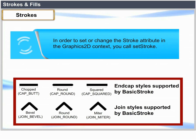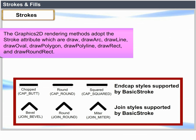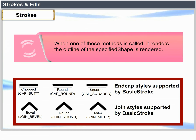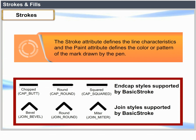The Graphics2D rendering methods that use the stroke attribute are draw, drawArc, drawLine, drawOval, drawPolygon, drawPolyline, drawRect and drawRoundRect. When one of these methods is called, it renders an outline of the specified shape.